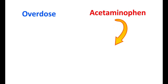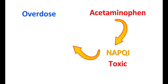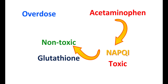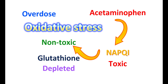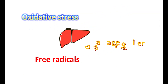In case of overdose, acetaminophen is more extensively metabolized into NAPQI, which is a toxic metabolite that can produce liver damage. Under normal doses, this toxic metabolite is converted into a non-toxic metabolite by the action of glutathione. But in overdose, glutathione levels are depleted, resulting in increased accumulation of the toxic metabolite and causing oxidative stress, which releases free radicals that produce damage to the liver.